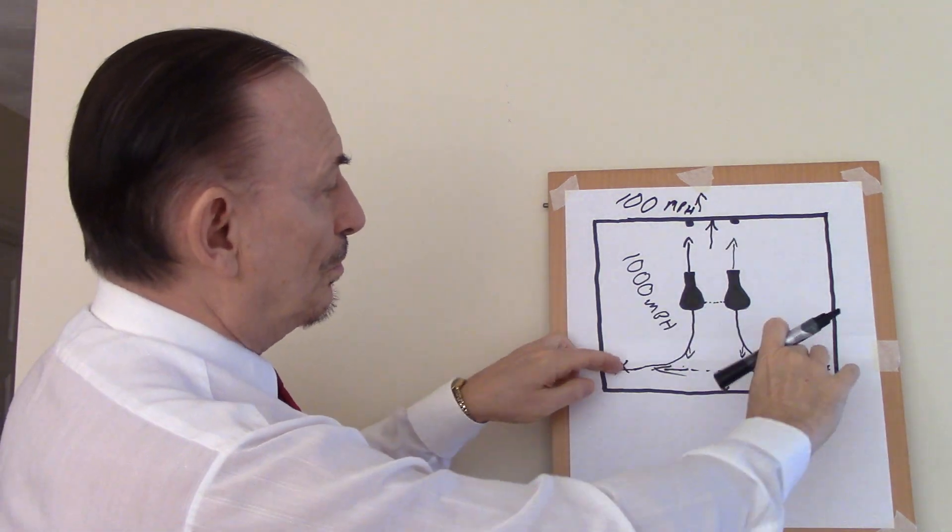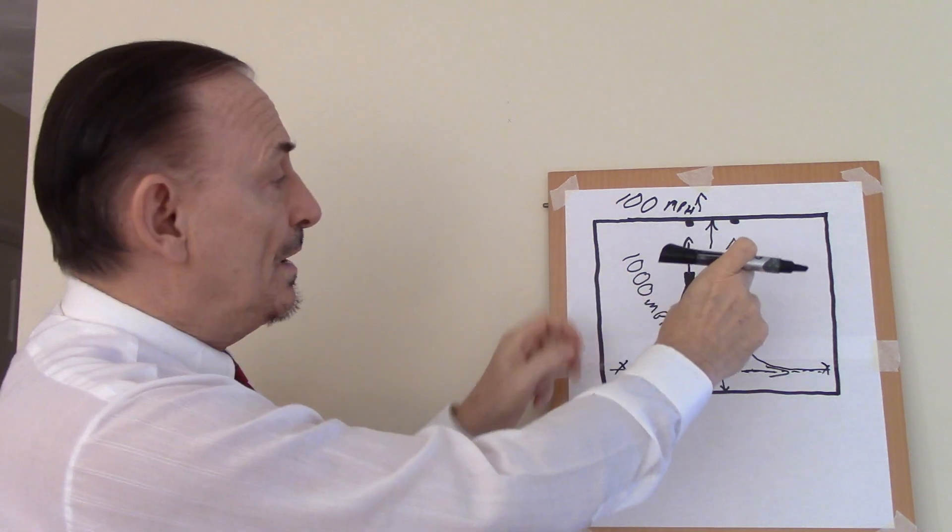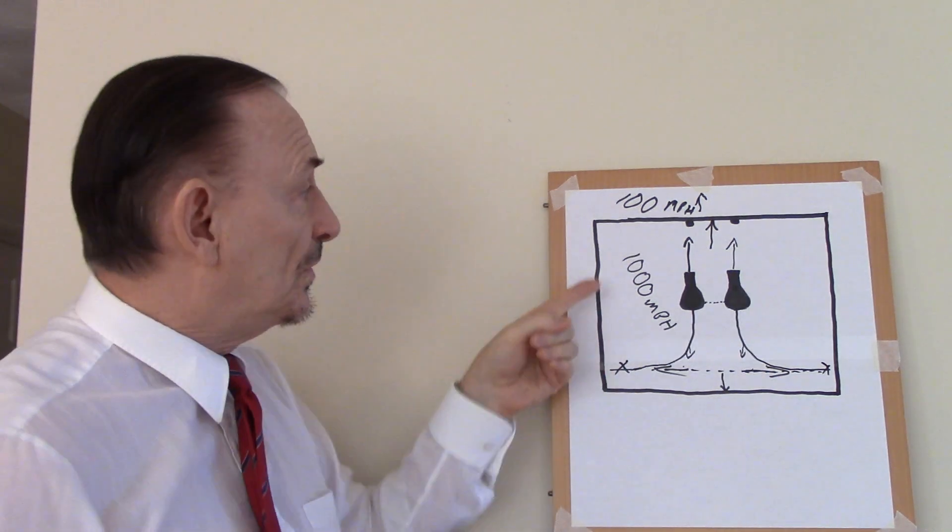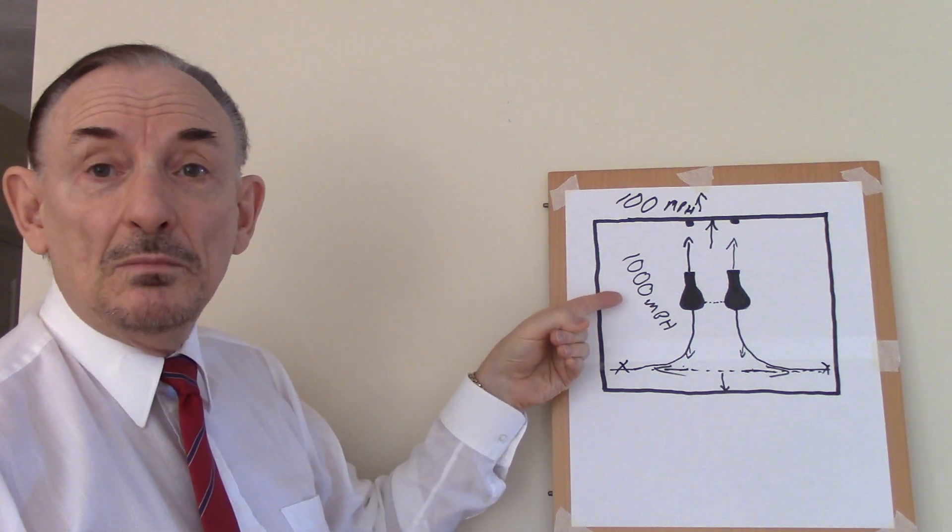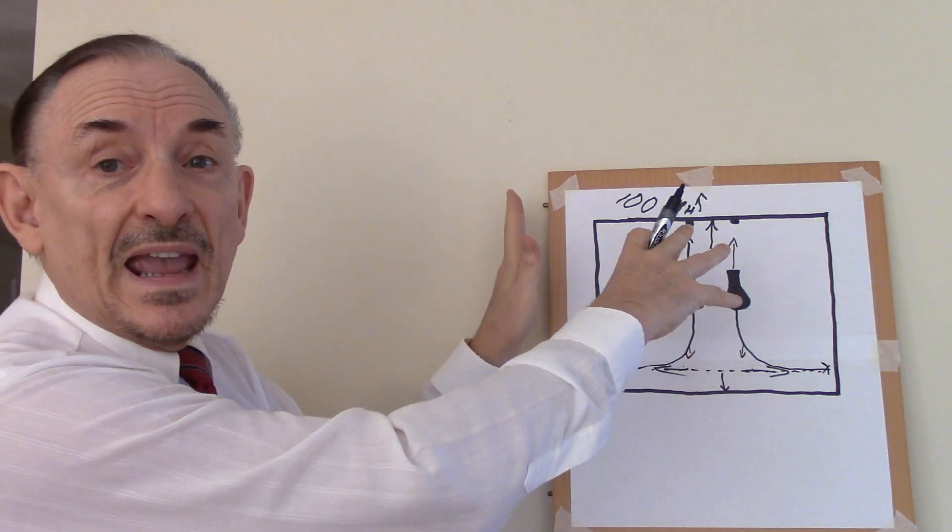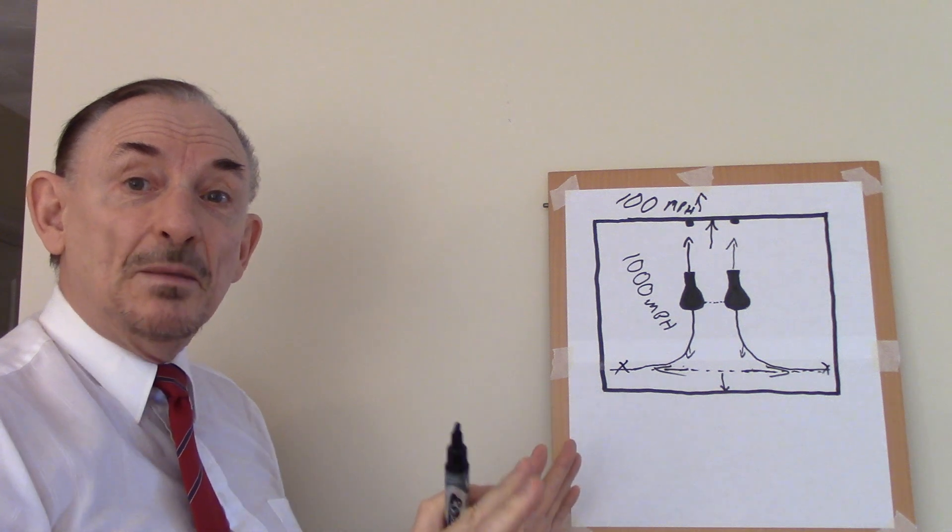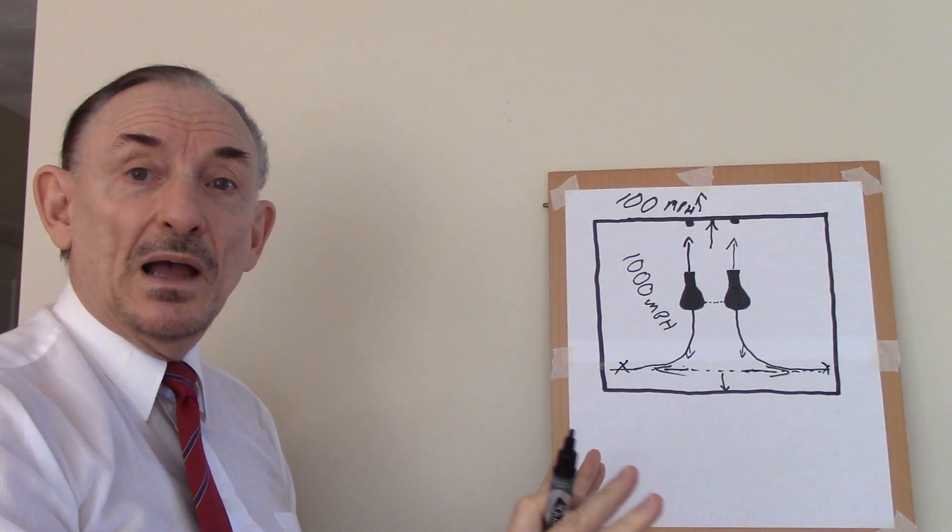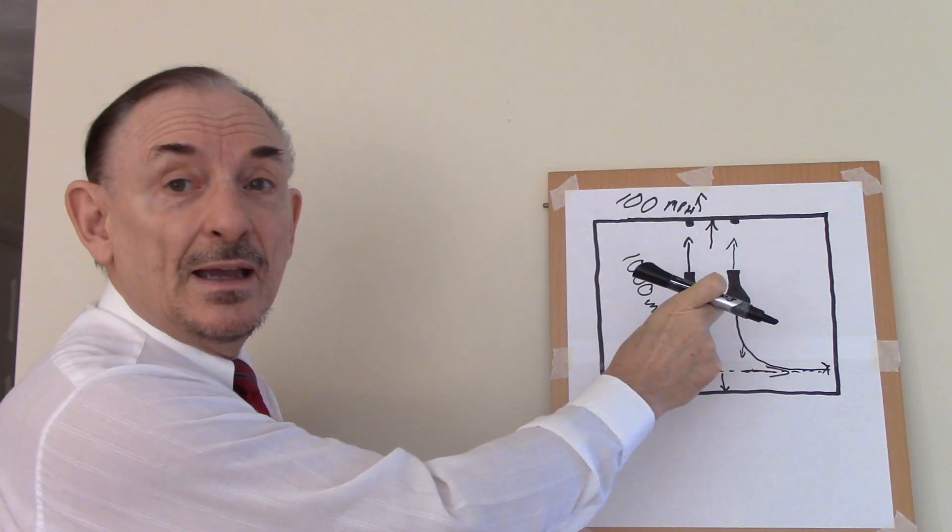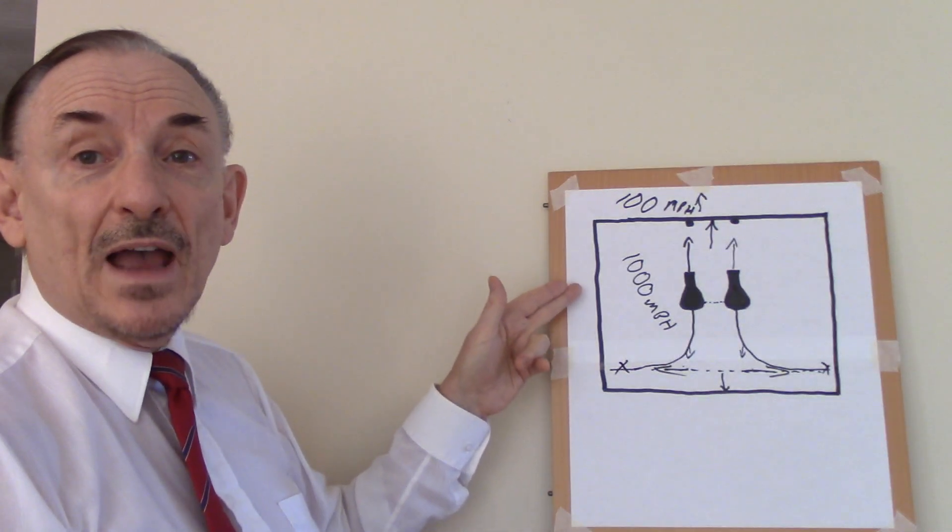Now you roll the cannons back to their original position, reload them, and fire them again. Inside the box, those beanbags are still traveling at 1000 miles an hour. But because the whole box is already moving ahead at 100 miles an hour, they're now traveling, in relation to outside the box, at 1100 miles an hour. So each time you fire these cannons, this box will go faster and faster and faster. You will continually accelerate.